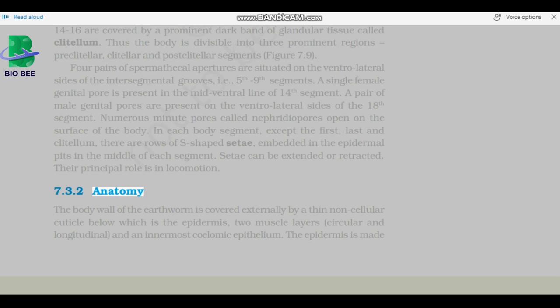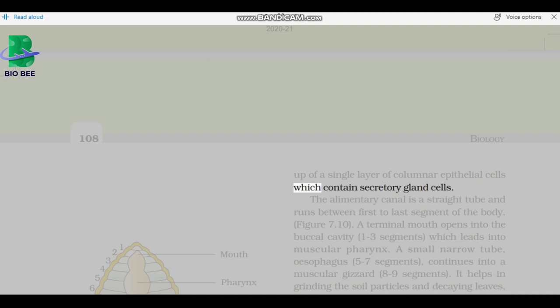Anatomy: The body wall of the earthworm is covered externally by a thin noncellular cuticle, below which is the epidermis, two muscle layers, circular and longitudinal, and an innermost coelomic epithelium. The epidermis is made up of a single layer of columnar epithelial cells, which contain secretory gland cells.